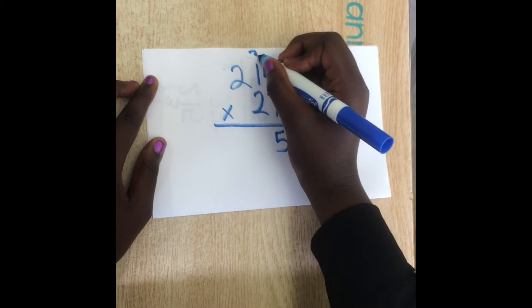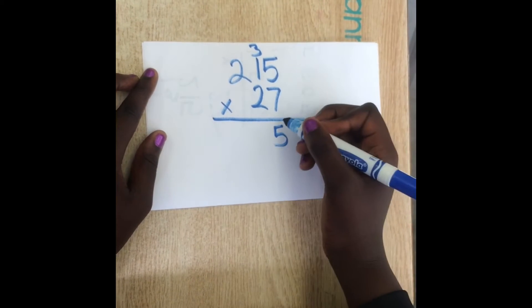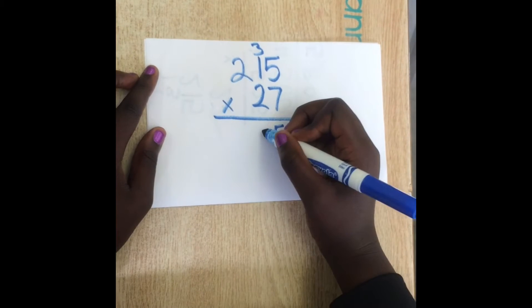Step 1. 7 times 5 gives you 35. You put the 5 under the 7 and the 3 over the 1.